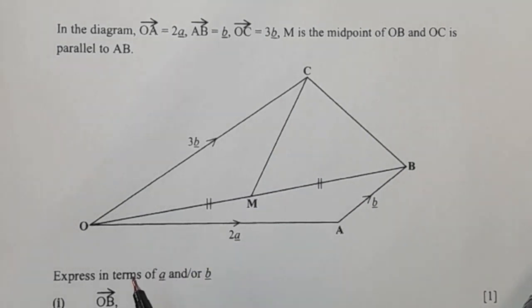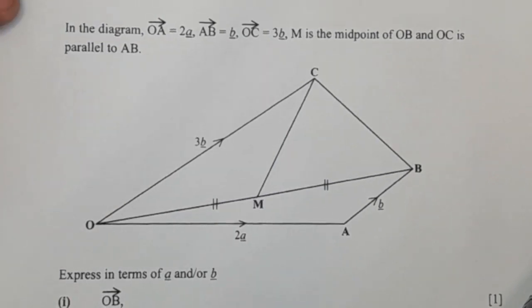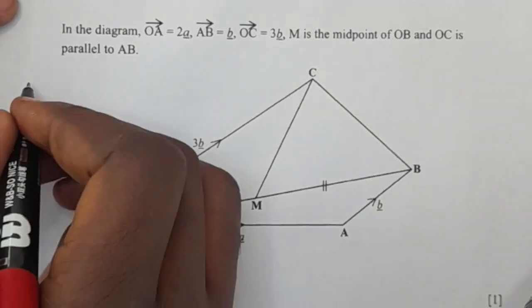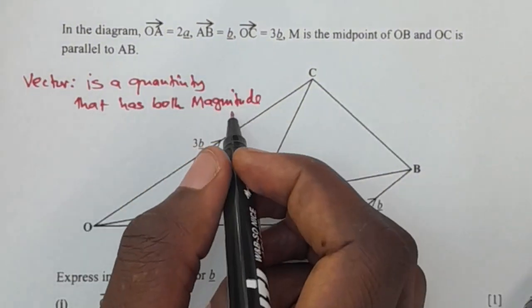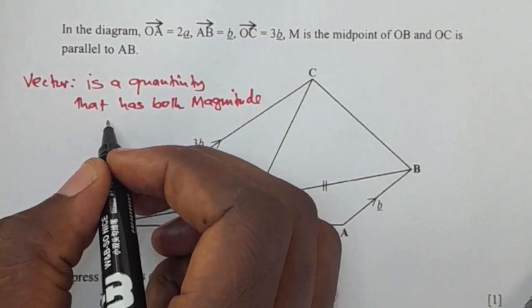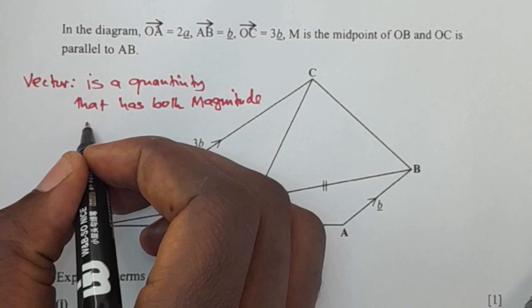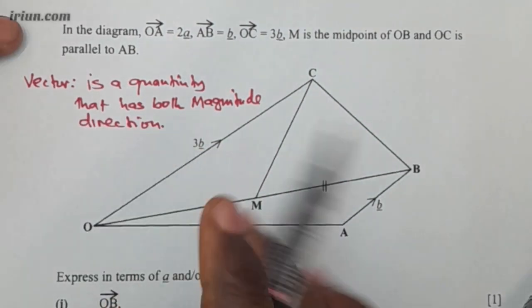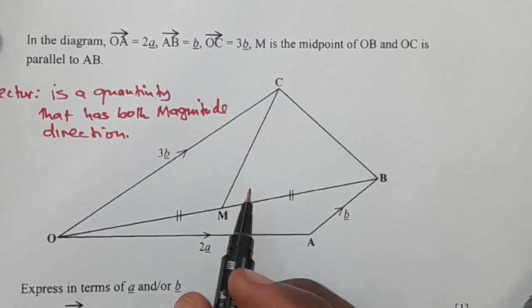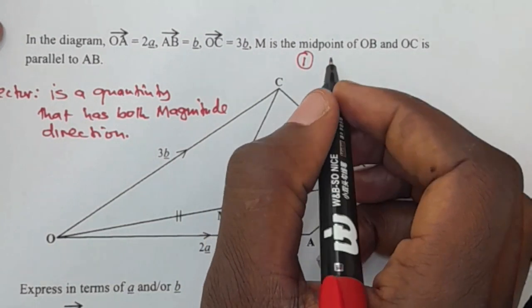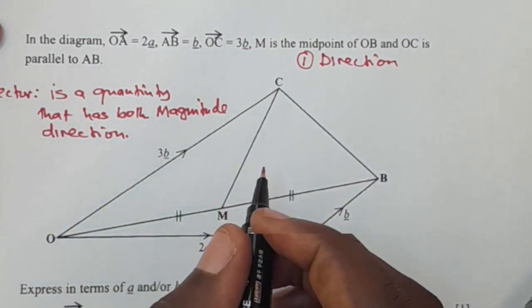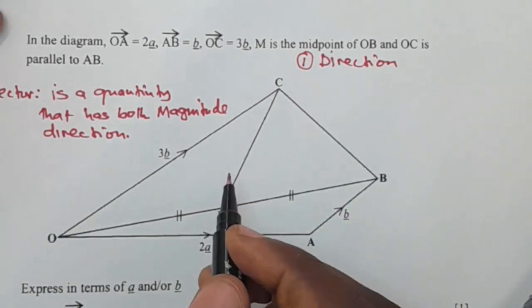Before we answer this question, it's very important that you understand what a vector is. A vector is a quantity that has both magnitude, so by magnitude we mean the size, and direction. So this definition brings us to two important things that you are supposed to consider as you are working out problems on vectors.